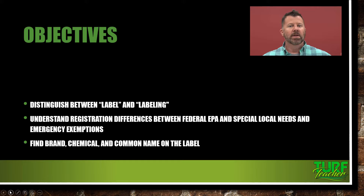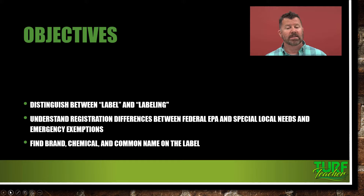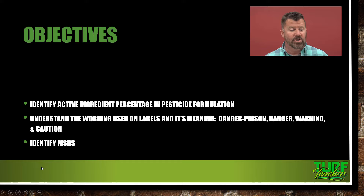We'll understand registration differences between federal EPA and special local needs and emergency exemptions. There are going to be times where the federal government steps in and says you can use this pesticide even though the EPA has not registered it. We'll also find the brand, chemical, and common name on a label; identify active ingredient percentage in a pesticide formulation; understand the wording used on labels — whether it's danger/poison, danger, warning, or caution — and identify what a material safety data sheet, or MSDS, is. Those are your objectives for Chapter 4.